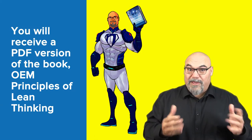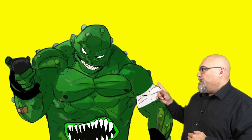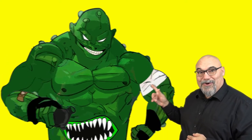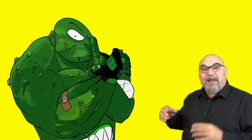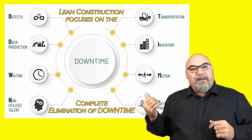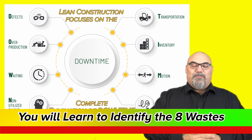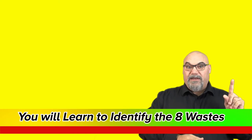Every hero — Captain Lean — needs a villain. So I'm also going to introduce Muda Man. Muda Man blinds you to what's called waste, and you're going to learn about the eight wastes in this process. So don't let Muda Man blind you — that's part of the story. So Muda Man is going to be introduced. That's Captain Lean and the Five Principles of Lean Thinking.